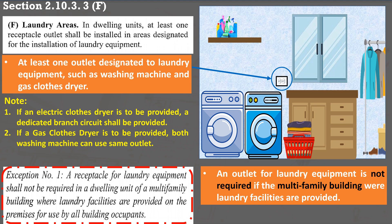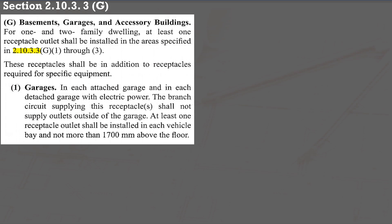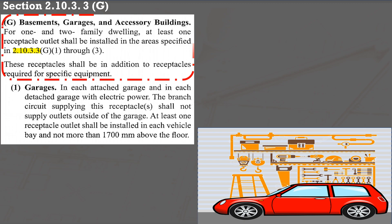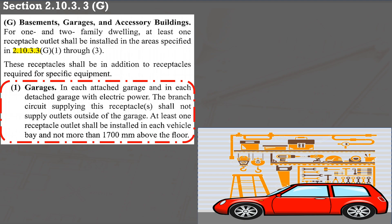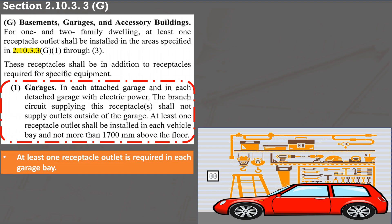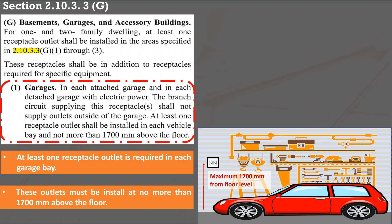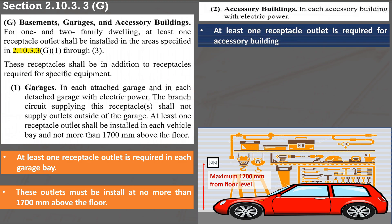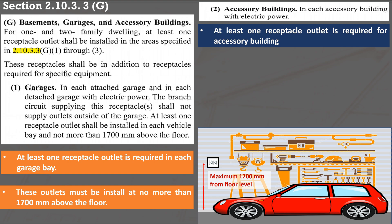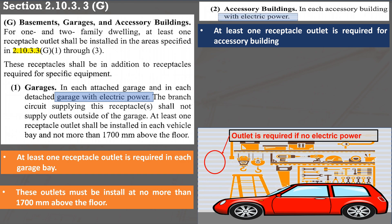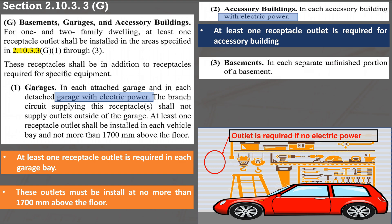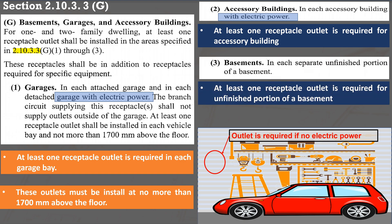At least one outlet is required for basements, garages, and accessory buildings of one- and two-family buildings as specified in section 2.10.3.3. For an attached or detached garage with electric power, an outlet shall be installed in each bay at a maximum height of 1,700 mm. For an accessory building with electric power, at least one outlet is required. If the garage or accessory building does not have an electric supply, an outlet is not required. In basements, a receptacle outlet is required in each separate unfinished portion.